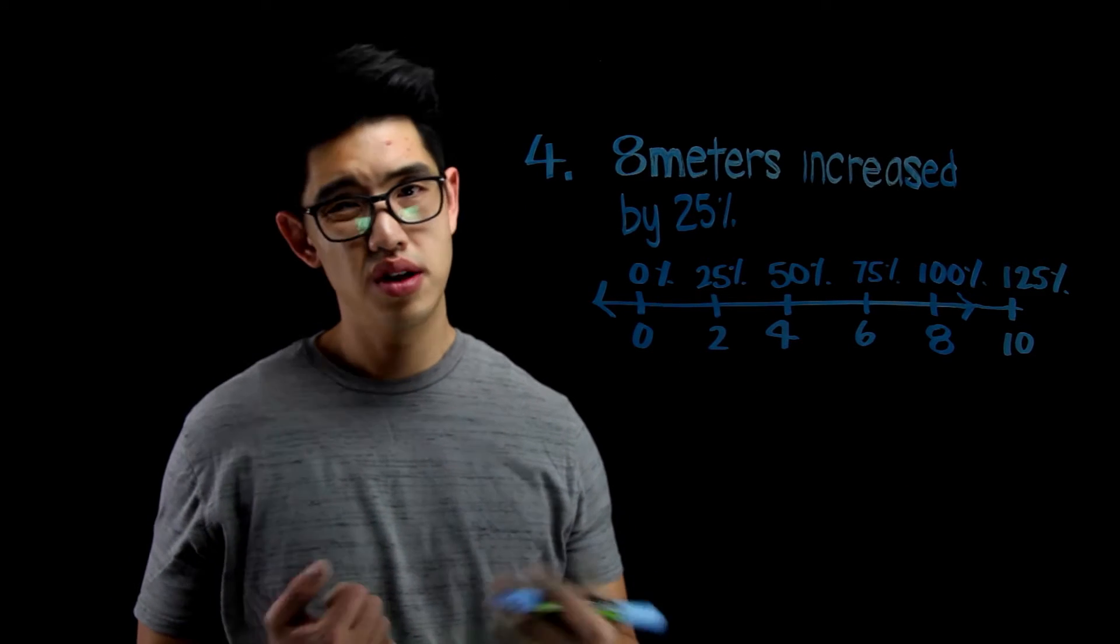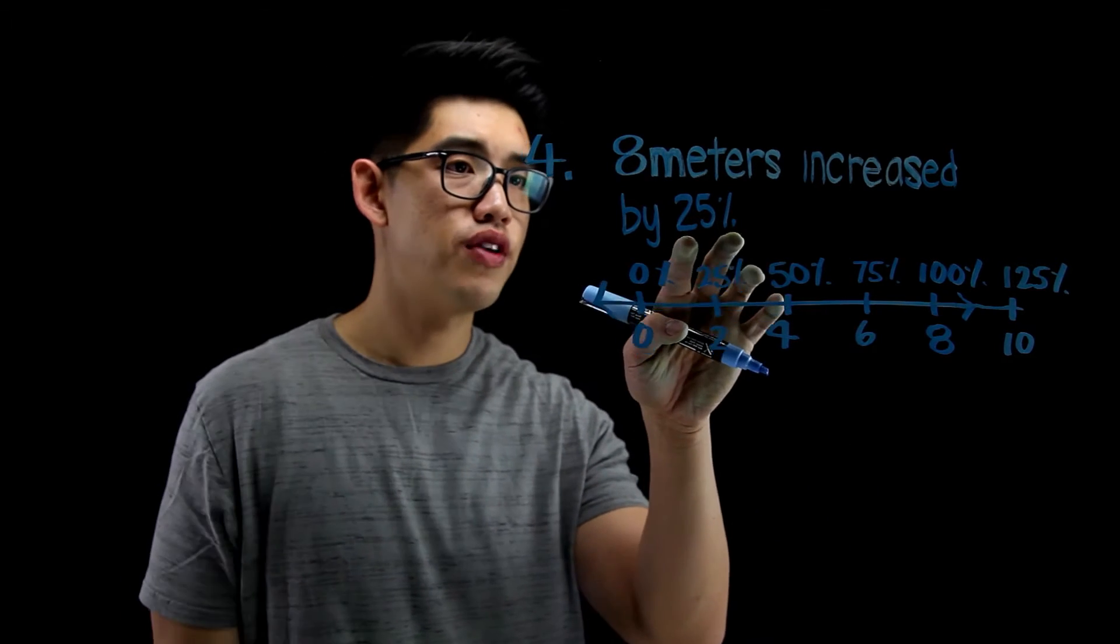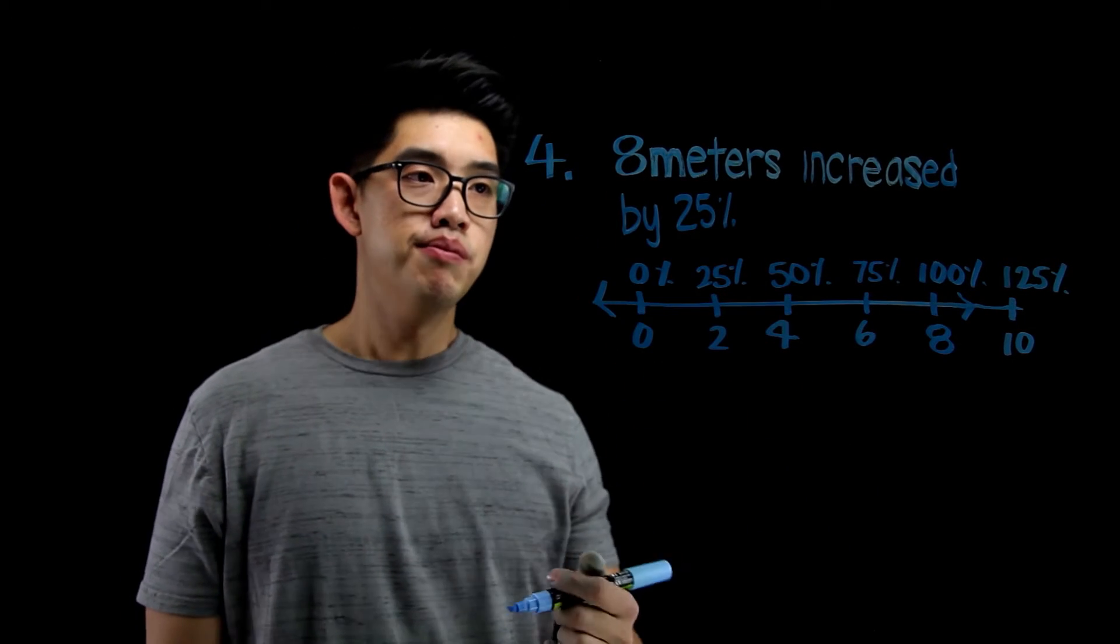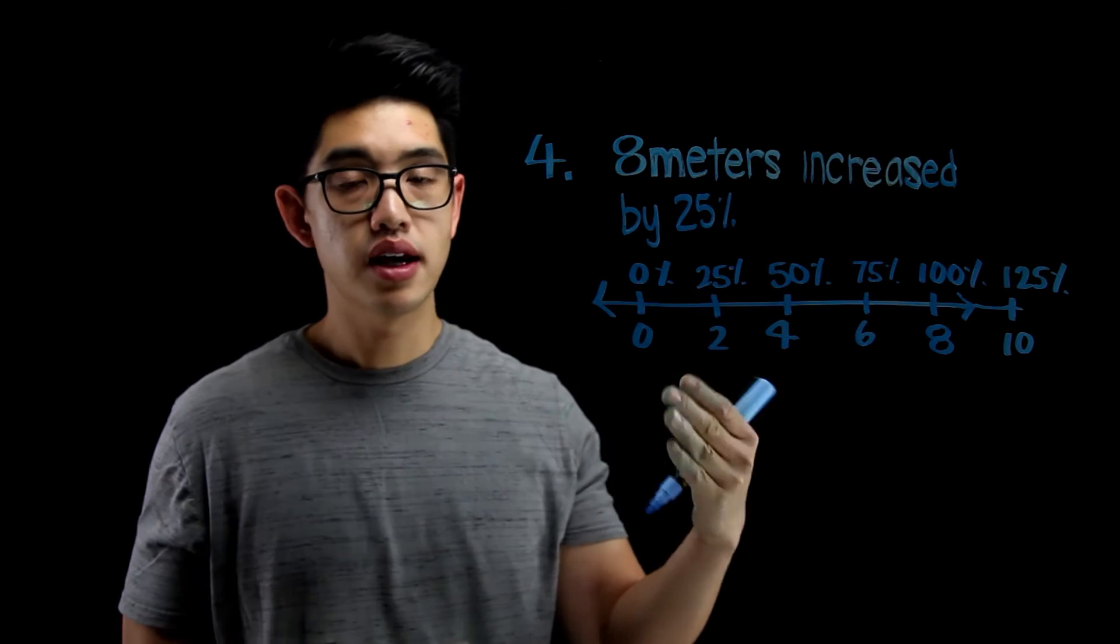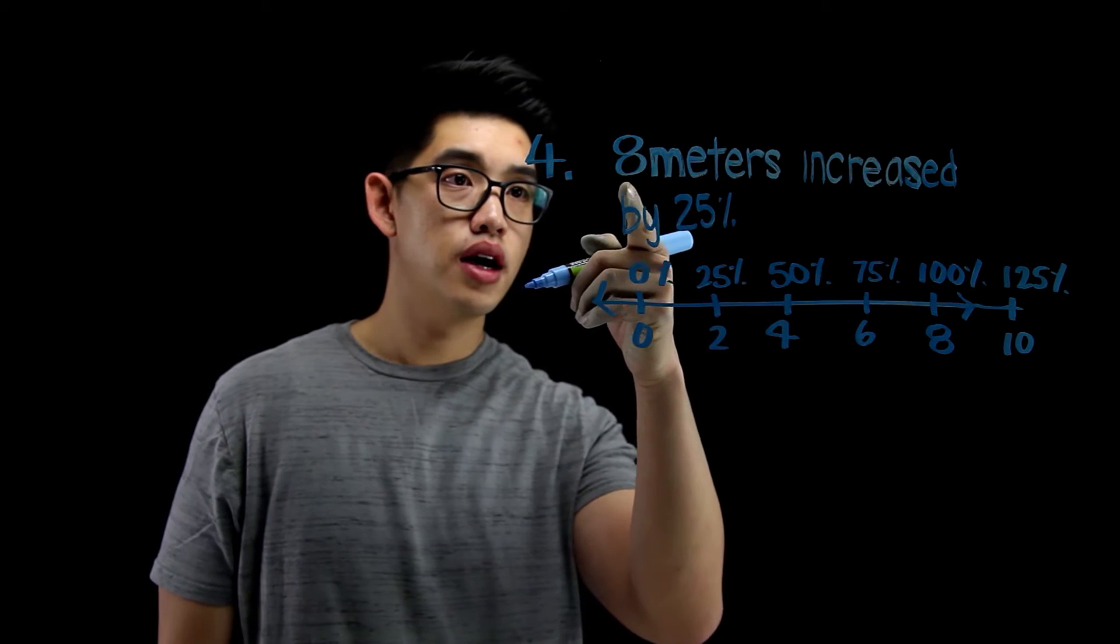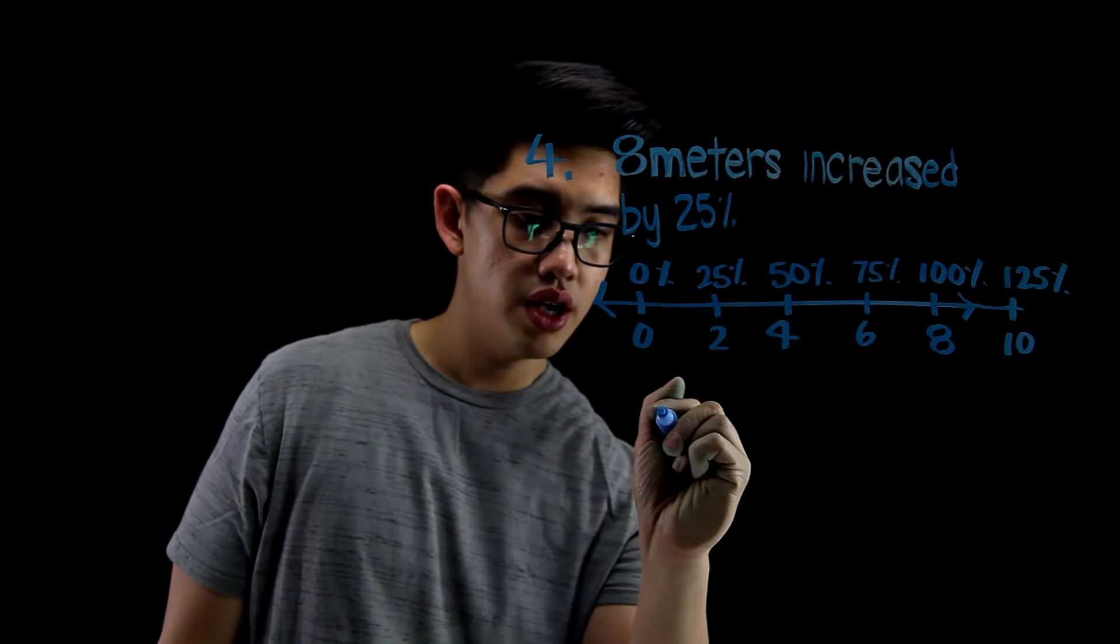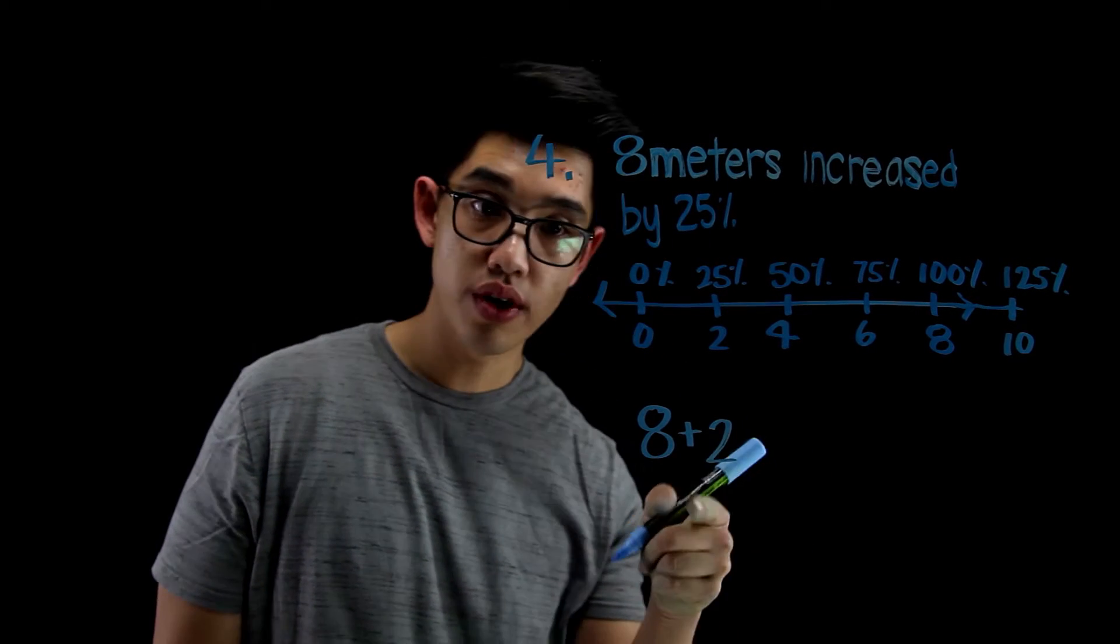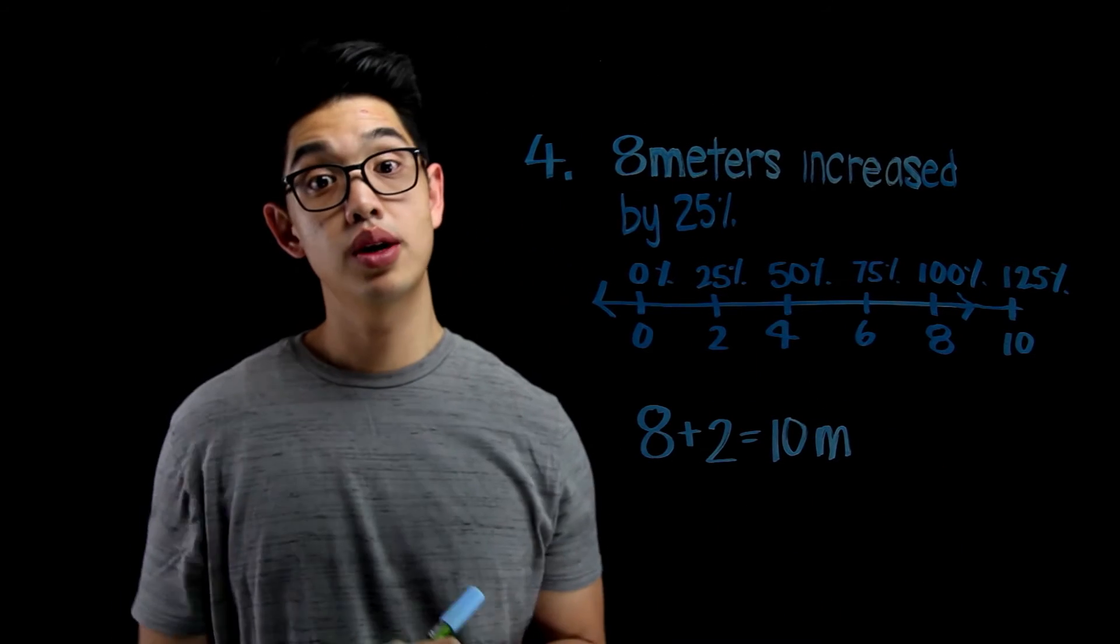Now, of course, there's another way you can do this. You could also just go, what's 25% of 8? What's 8 divided by 4? Because that's like the same thing. 25% of 8 is 8 times 1 fourth or 8 divided by 4. So 8 times 1 fourth, 8 divided by 4, that's 2. So you have 8 plus the other 2, which is the 25%, that gives you 10 meters. So, that's your answer.